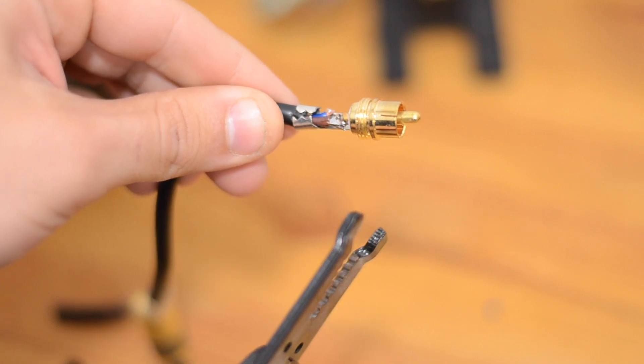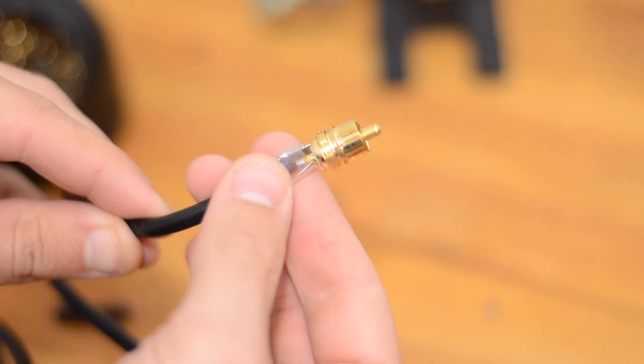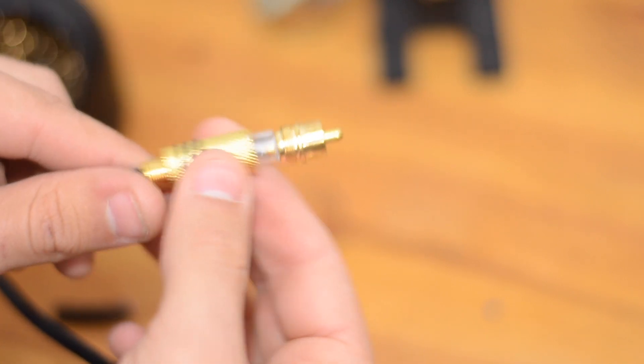Finally, I'll crimp the connector onto the black wire insulation, slide the little plastic cover over, and then screw together the connector.